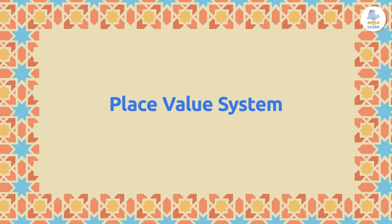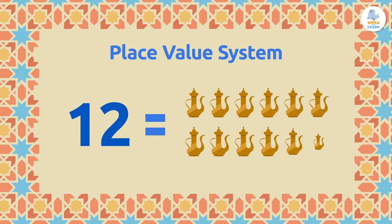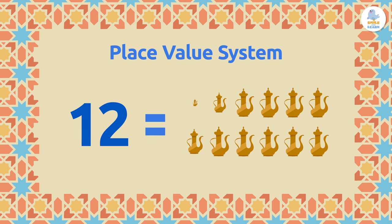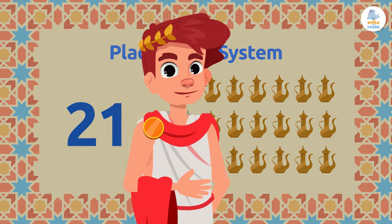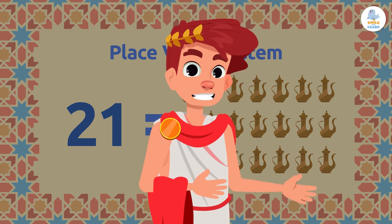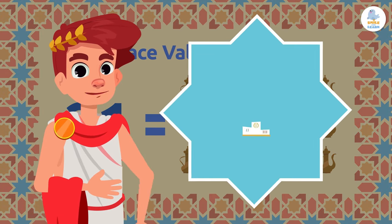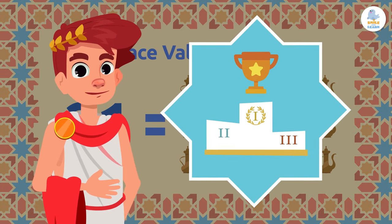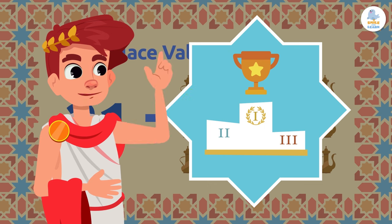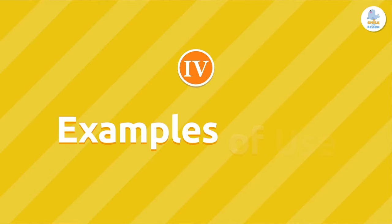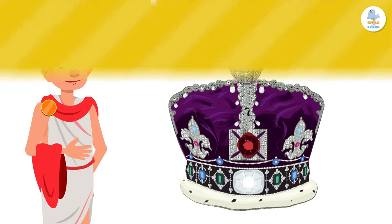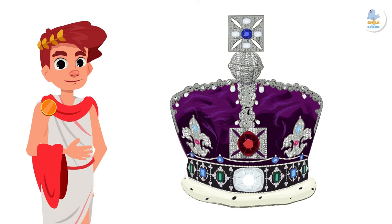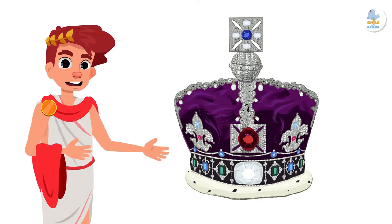Today, the numbering system we use is of Arabic origin. This is a place value system, which means that the value of each digit depends on the place it has in the number. And today we still use Roman numerals for some things — let's have a look at what we use Roman numerals for.